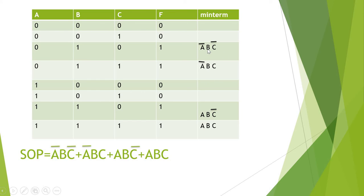The SOP is the sum of all these minterms: A-bar·B·C-bar + A-bar·B·C + A·B·C-bar + A·B·C. That is the SOP — sum of minterms.